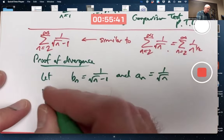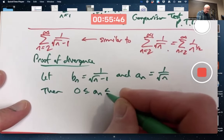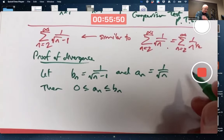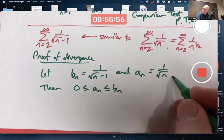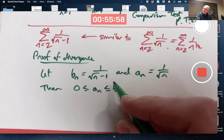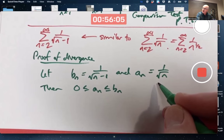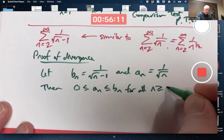And yes, it is true. These things are non-negative and a_n is less than or equal to b_n. Why? Because the denominator of a_n — the bottom of the fraction — is bigger than it is for b_n, making the whole fraction smaller. When dealing with positive numbers, when you divide by a bigger number, you get a smaller number.